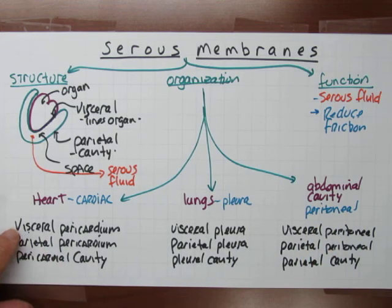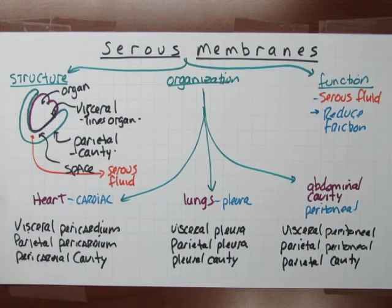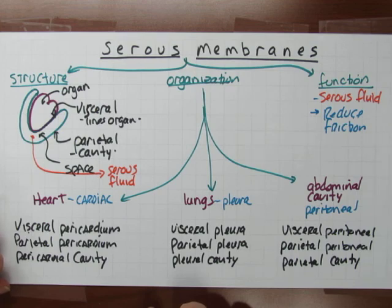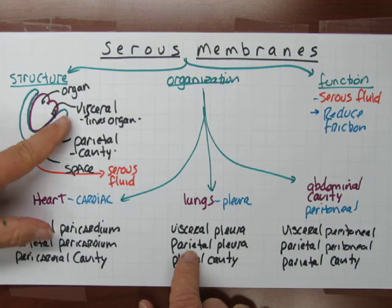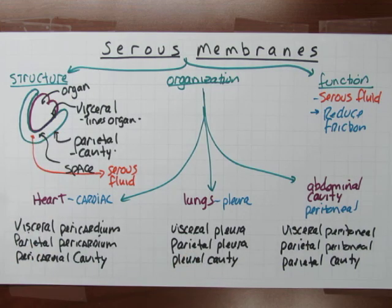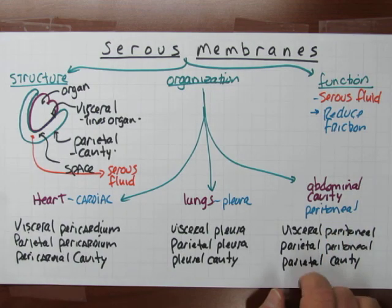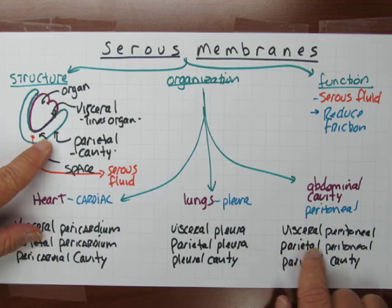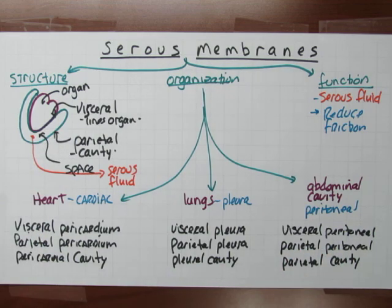The pericardial layer closest to the heart is the visceral layer; the layer lining the cavity is the parietal layer, forming the pericardial cavity. For the lungs, the layer connected to the lung tissue itself is the visceral pleura; the layer lining the cavity is the parietal pleura, forming the pleural cavity. For the organs in the abdominal cavity — the stomach and intestines — the serous membranes directly attached to them are the visceral peritoneal; the parietal peritoneal lines the cavity, forming the peritoneal cavity.